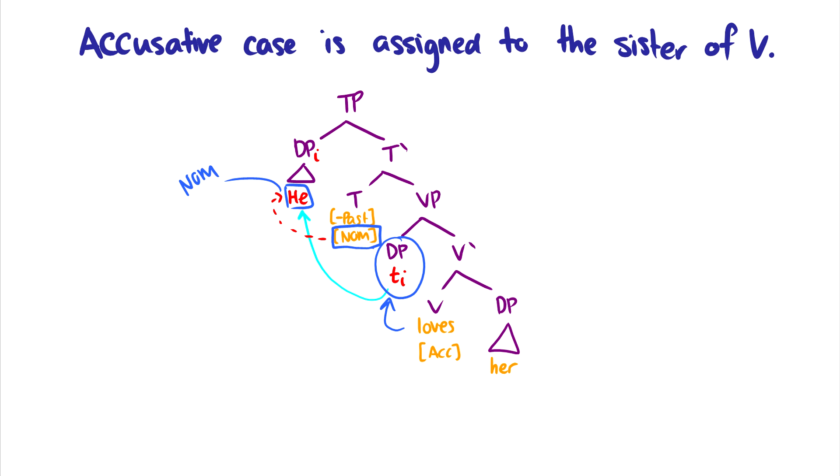But what about her? So her is the object and her is actually pretty straightforward. Accusative case is on V. And it just assigns accusative case to V's sister. So now her has accusative case. And we can say that this case is now licensed by V. We can say nominative case is licensed by T. And accusative case is licensed by V. So here's nominative and accusative case.